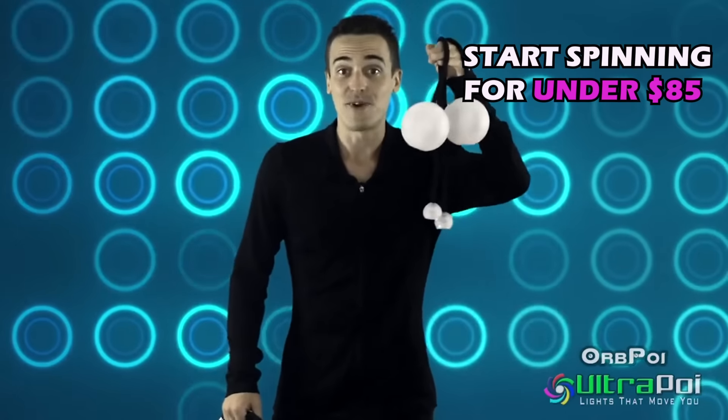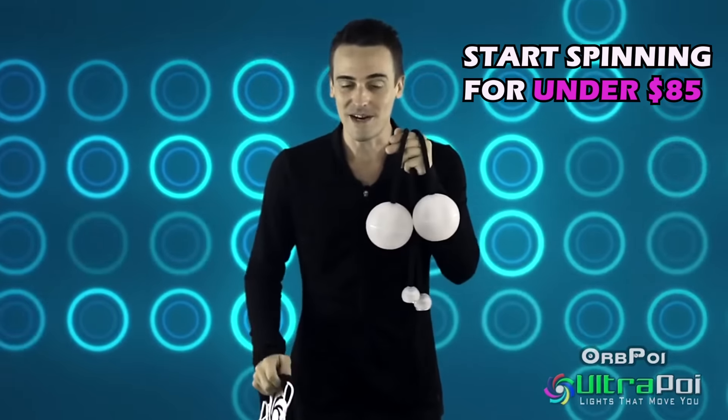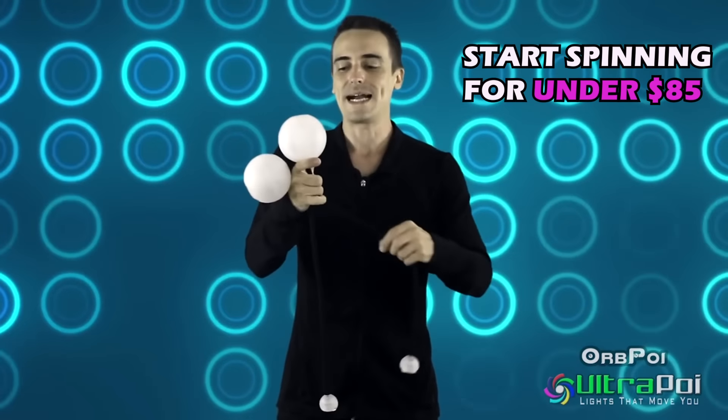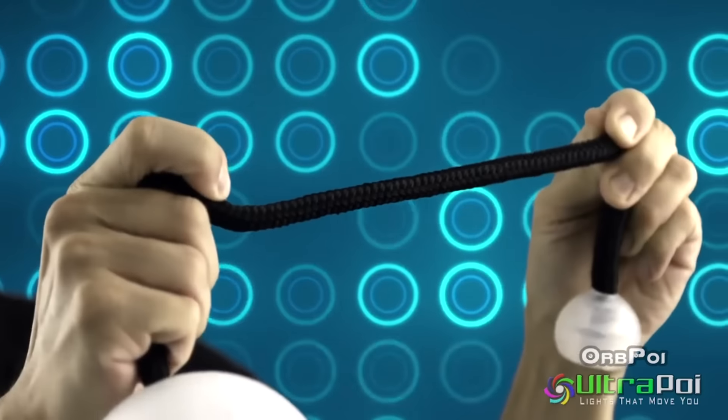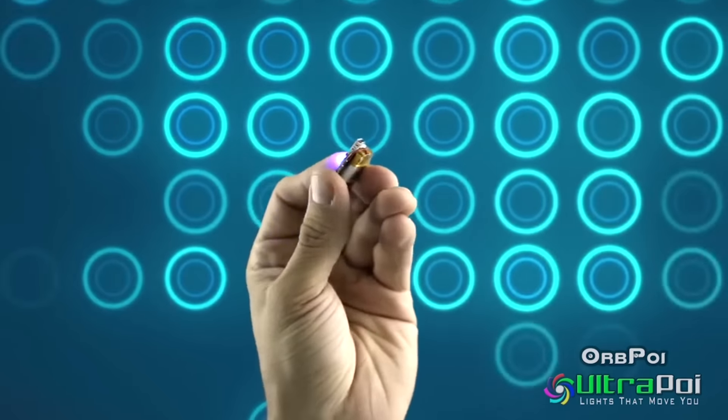And here they are right here and they come in a nice little travel pouch too. So what we're talking about here are custom 97 millimeter contact poi balls attached to 3 1/8 inch thick ropes and silicone knob handles on the end enhanced with the XL Pro LED chips.